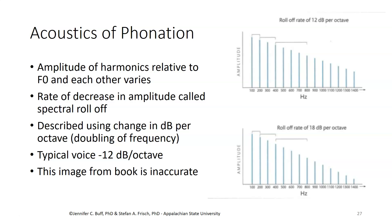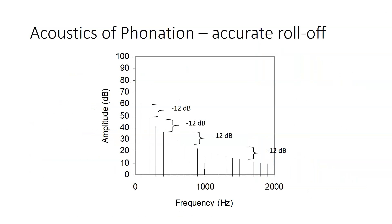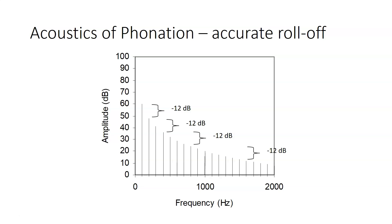However, these images are inaccurate in that they make the drop-off look linear, and it's not, because of this octave property with a doubling of frequency. Here is an image with an accurate roll-off, and you see the amplitudes make more of a curved shape rather than a linear shape. Each time you double frequency, you have a drop in amplitude of 12 dB — so from 100 to 200, then from 200 to 400, from 400 to 800, from 800 to 1600.